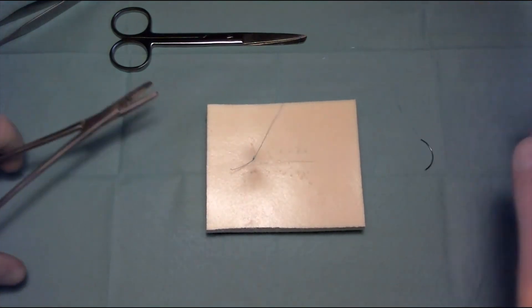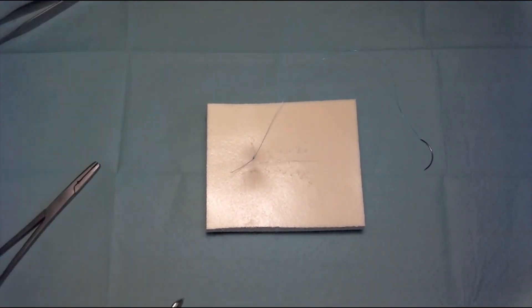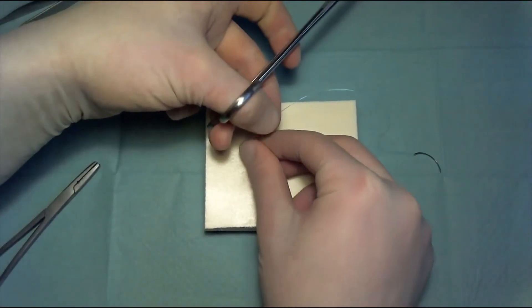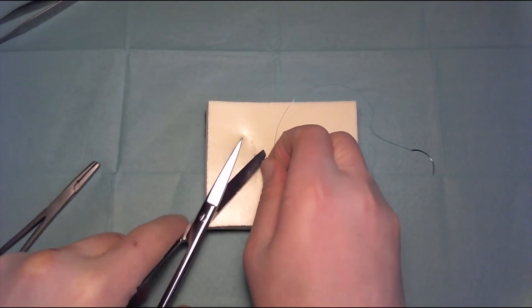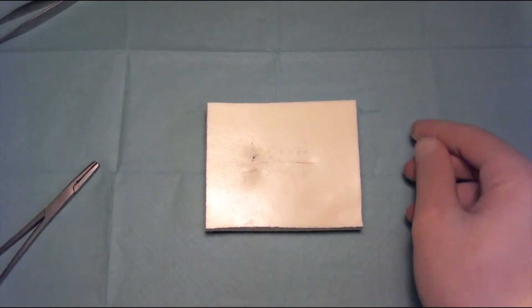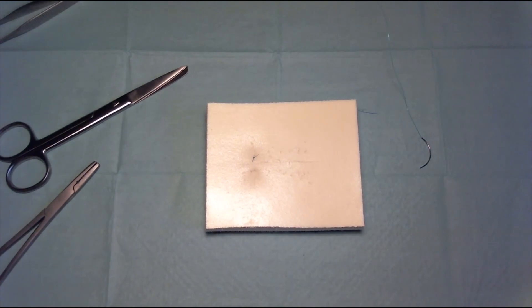Now we just have to cut the ends. Pull them up, use our Mayo scissors, and cut it. So that's our Denabi suture.